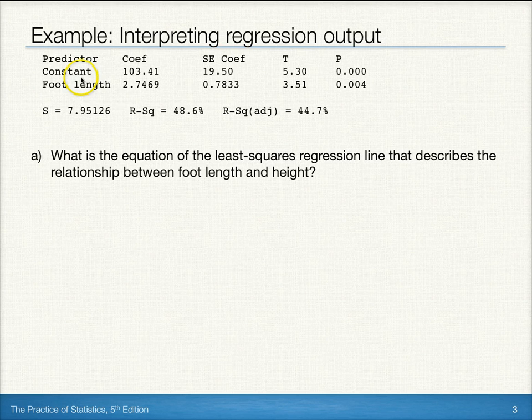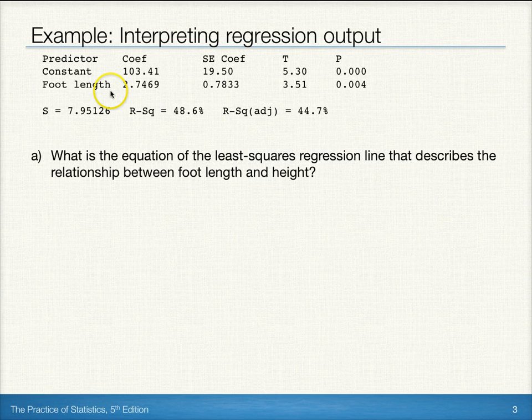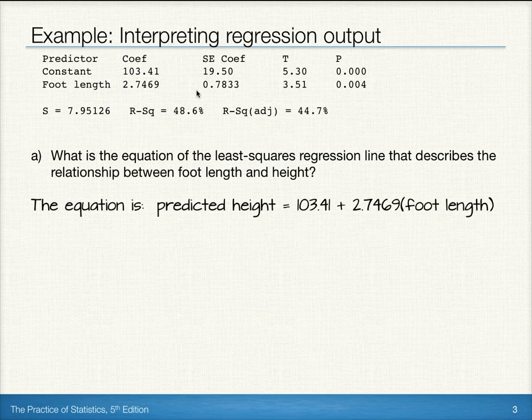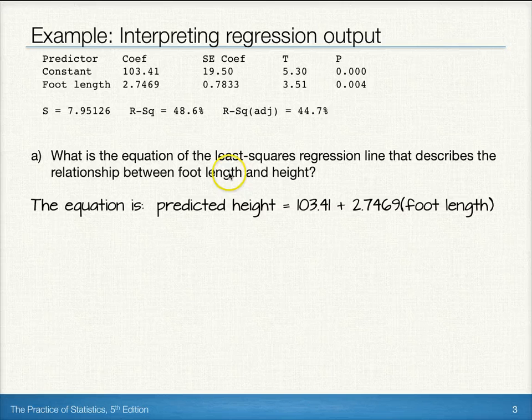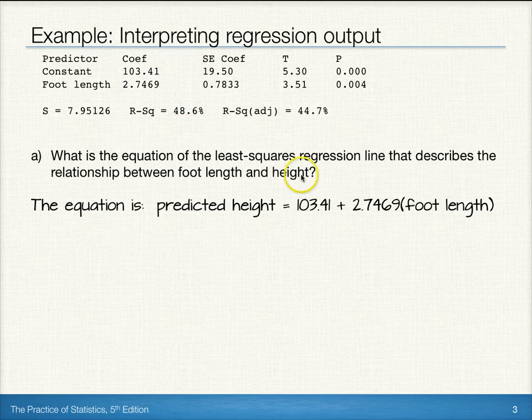One of the coefficients is related to the constant, and the other coefficient value is related to foot length. The value related to the constant is our y-intercept, while the value related to the variable foot length is our slope. So the equation of this regression line is predicted height equals 103.41 plus 2.7469 times foot length.